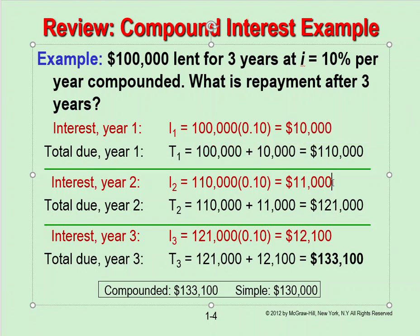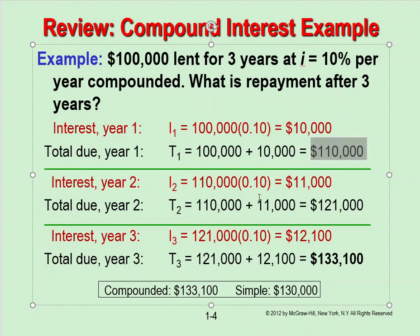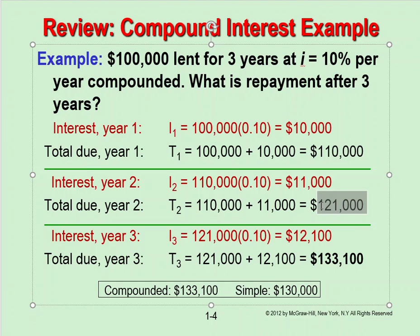So in year two, you take one hundred ten thousand, calculate 10% interest on that, and add that new interest to get the new total. Then in year three, you use the previous amount of one hundred twenty-one thousand as your base and calculate interest on that. This is what we call compounding.